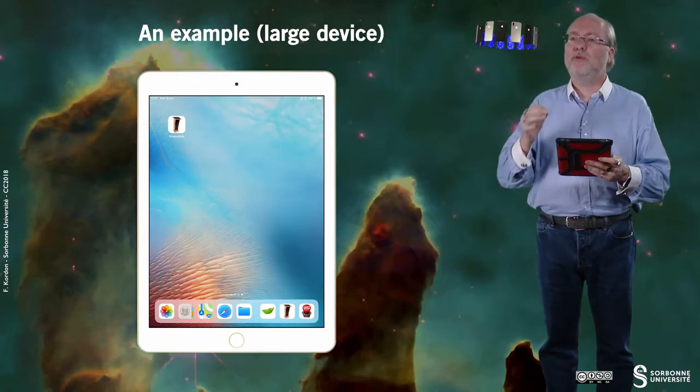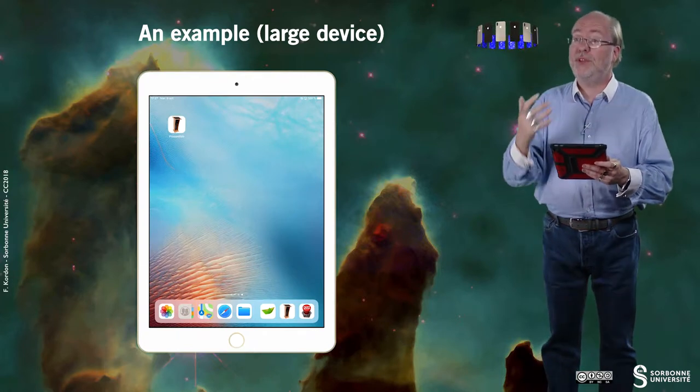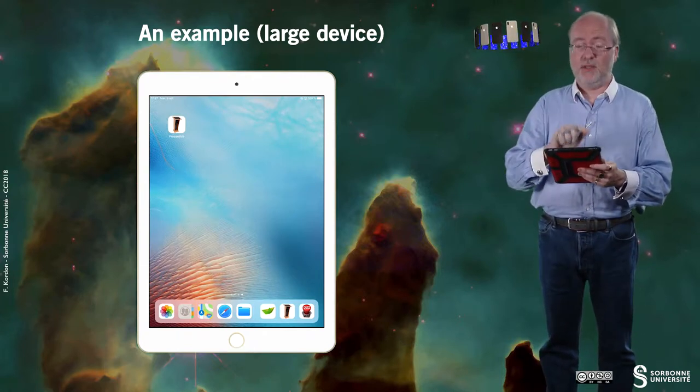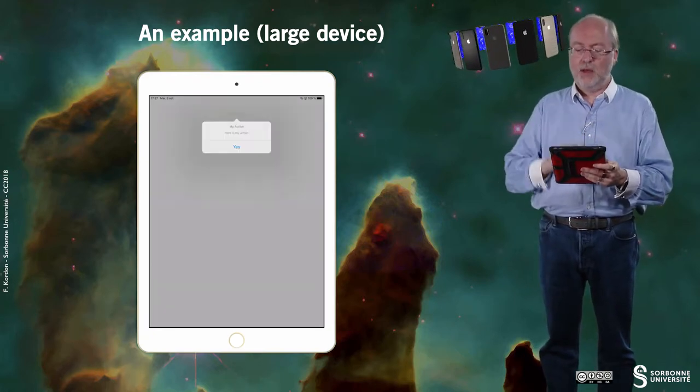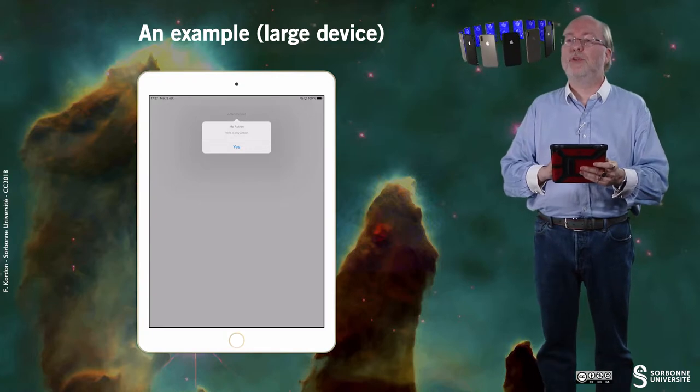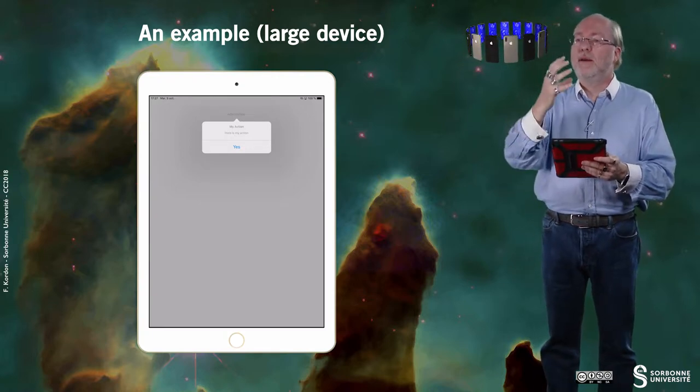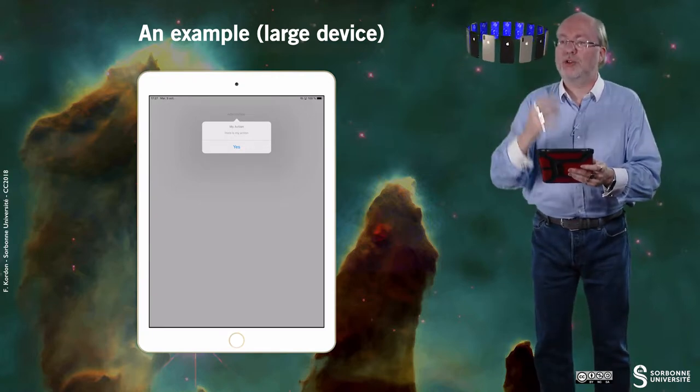Let's now have a look on the same example, but this time running on a large device. So, I still have the same layouts. But here, when I tap on the first button, you see that my action just drops.